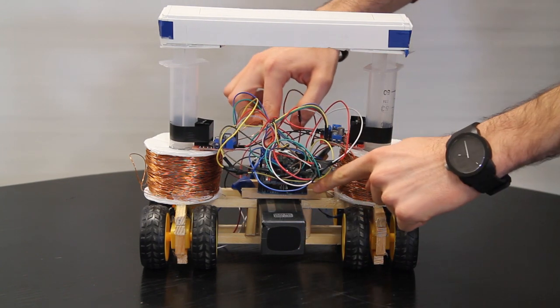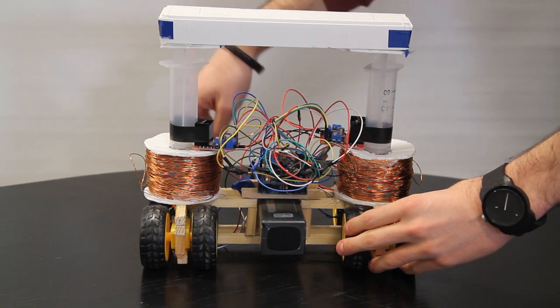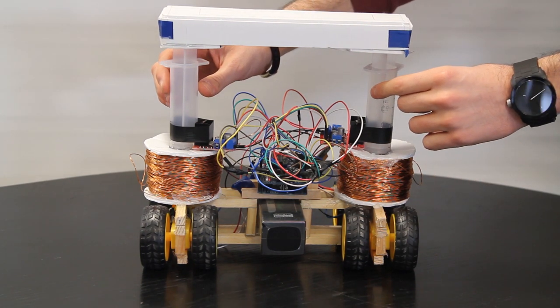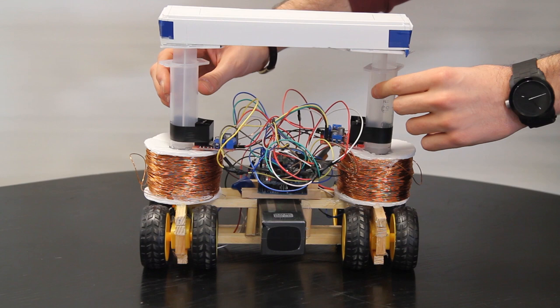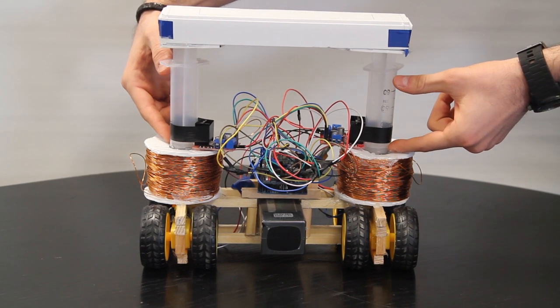On top of the Arduino, we placed a motor shield to drive the four different wheels individually. For the suspension part, we have two cylinders and inside them we have two repelling neodymium magnets. This subsystem is utilized as passive suspension.